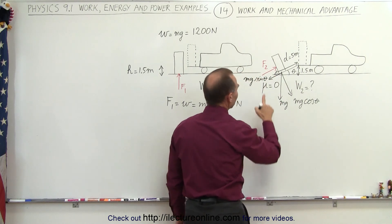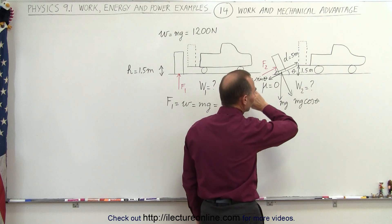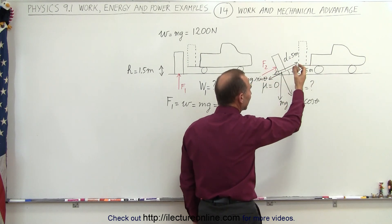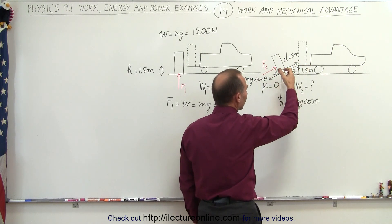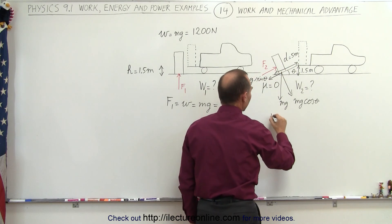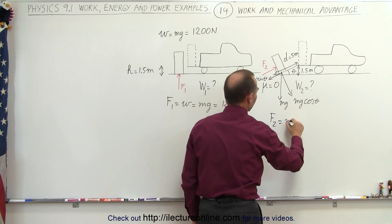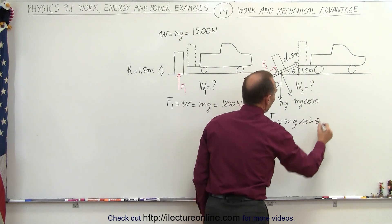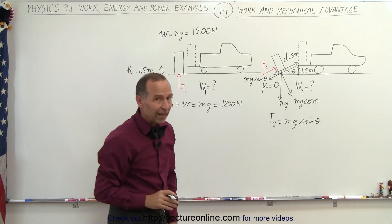And you can see then that by definition to push something up at a constant speed you don't need any additional net force, the net force will be zero, so F2 must equal mg sine theta. Now what is sine theta equal to in this case?